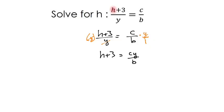And my last step to getting that H by itself is I'm going to subtract three. Anything I do to one side, I got to do to the other. And we'll be left with H equals CY over B minus three.